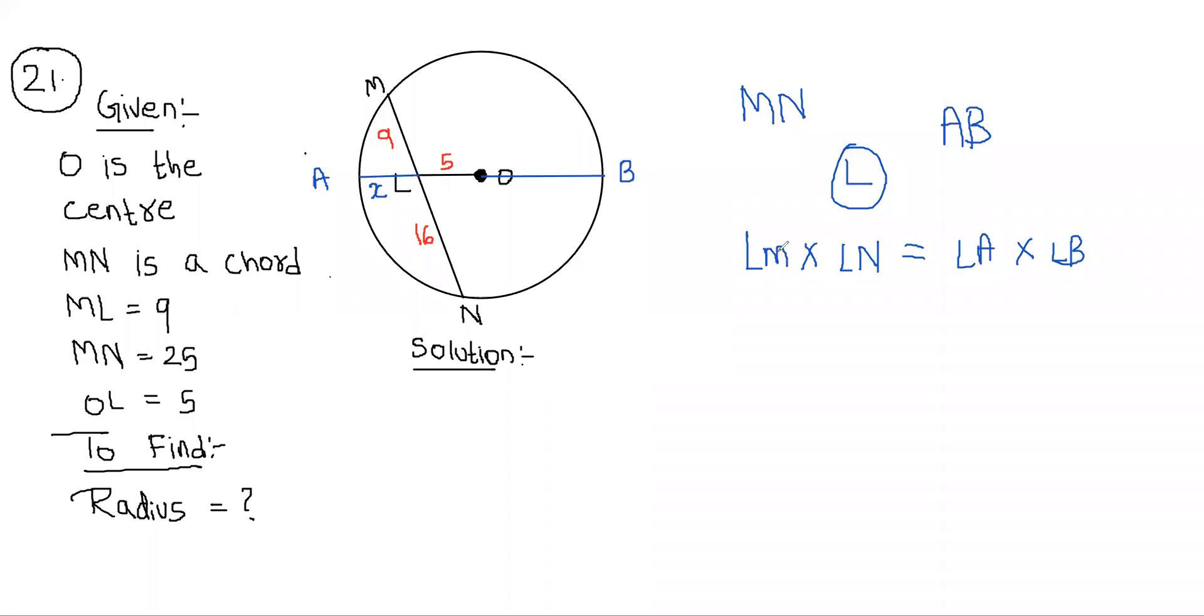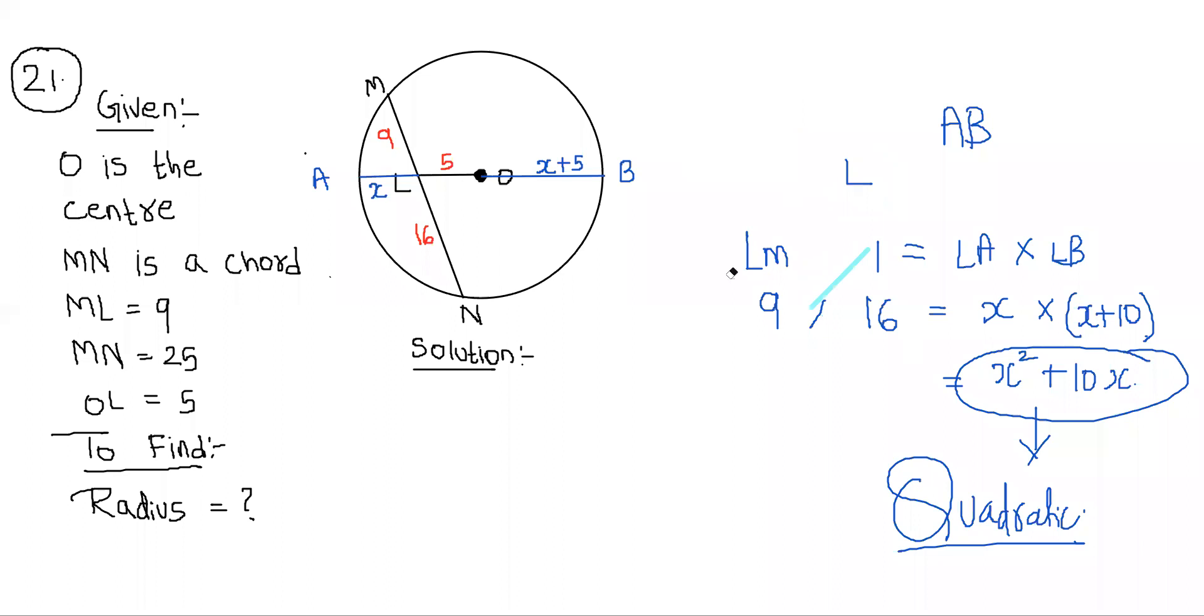So LM. What is LM? LM clearly is 9. What is LN? 16. What is LA? X. What is LB? We have to find this differently. But at the moment we write in the figure that OB was X plus 5. So 5 plus X plus 5 is X plus 10. We have to solve this. If we solve this, what will we get? We will get an equation where the highest index is 2. We call it as what type of equation? Quadratic equation. That means we are going to get quadratic equation which we will solve it further and get the value of X.